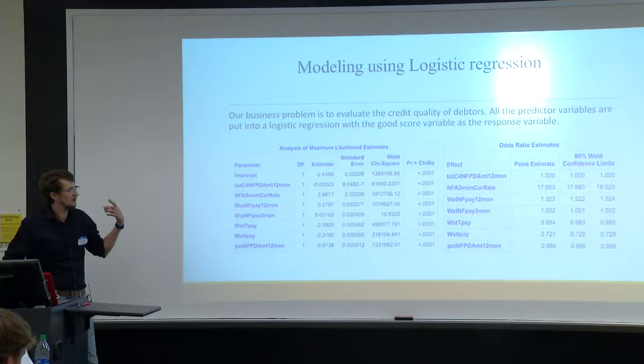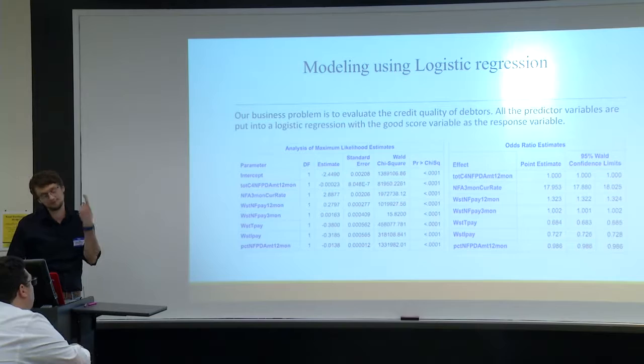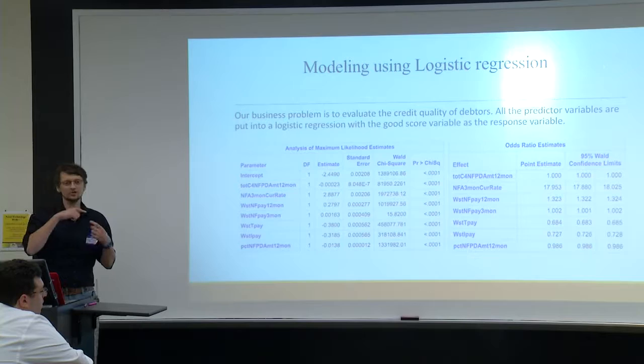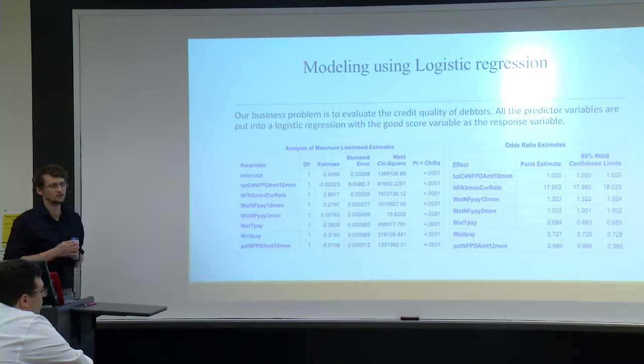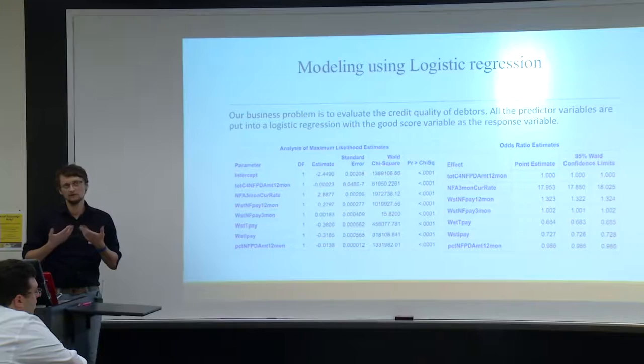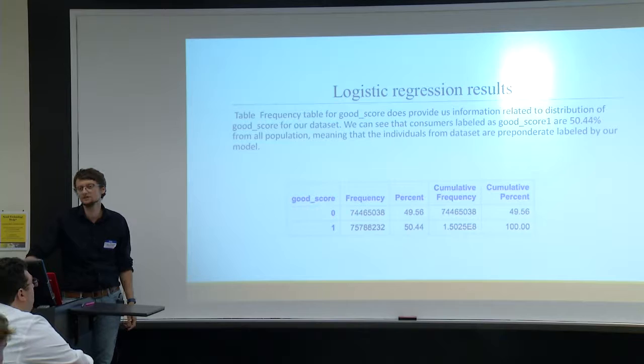The most influential variables were coded variables representing whether payments were on time, late by 3 months, 12 months, or 24 months. After building the model, based on an internal credit score the data provider had — where each variable was weighted — I applied a cutoff point: if the score is more than 550, the customer is good; if less, they are subject to failure. I ended up with a certain distribution of predicted good and bad customers in the dataset. Zero is bad, one is good.